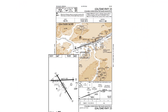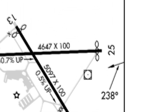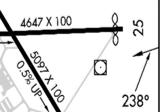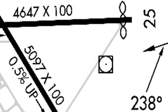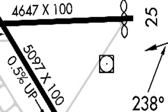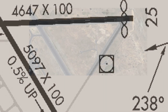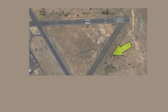If we look at the airport view on the approach plate, we see an arrow representing the approach course at 238 degrees, leading not into the runway, but to that localizer offset to the south side of runway 25. On the satellite view, we can see the location of that localizer as well.